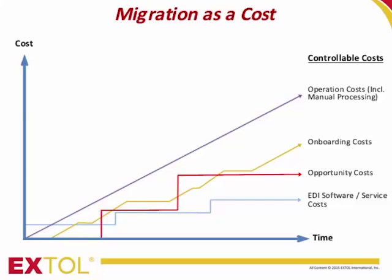The next category is onboarding costs, including the time and labor needed to create and maintain trading partner integrations by provisioning communications, maps, business processes, and other deliverables. Most modern EDI solutions offer substantial productivity and time savings benefits in this category. The next category is operating costs, which include EDI monitoring and reporting, exception handling, system maintenance and backups, and other daily or periodic functions. This also includes avoidable manual processing — for example, manually processing spreadsheet-based orders — because those are things that, with the right solution, you could be automating.